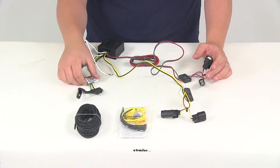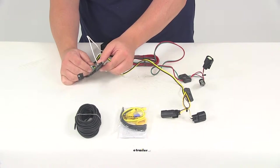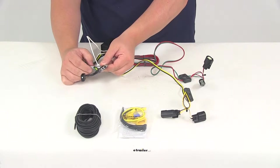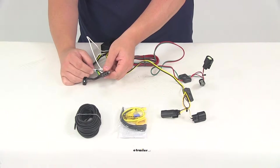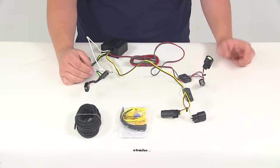Now this unit's going to provide your four-pole flat trailer connector at the back of your vehicle. That's going to power your trailer signal lights. It can be used with five pole, six pole, or seven pole adapters. Those are going to be sold separately.